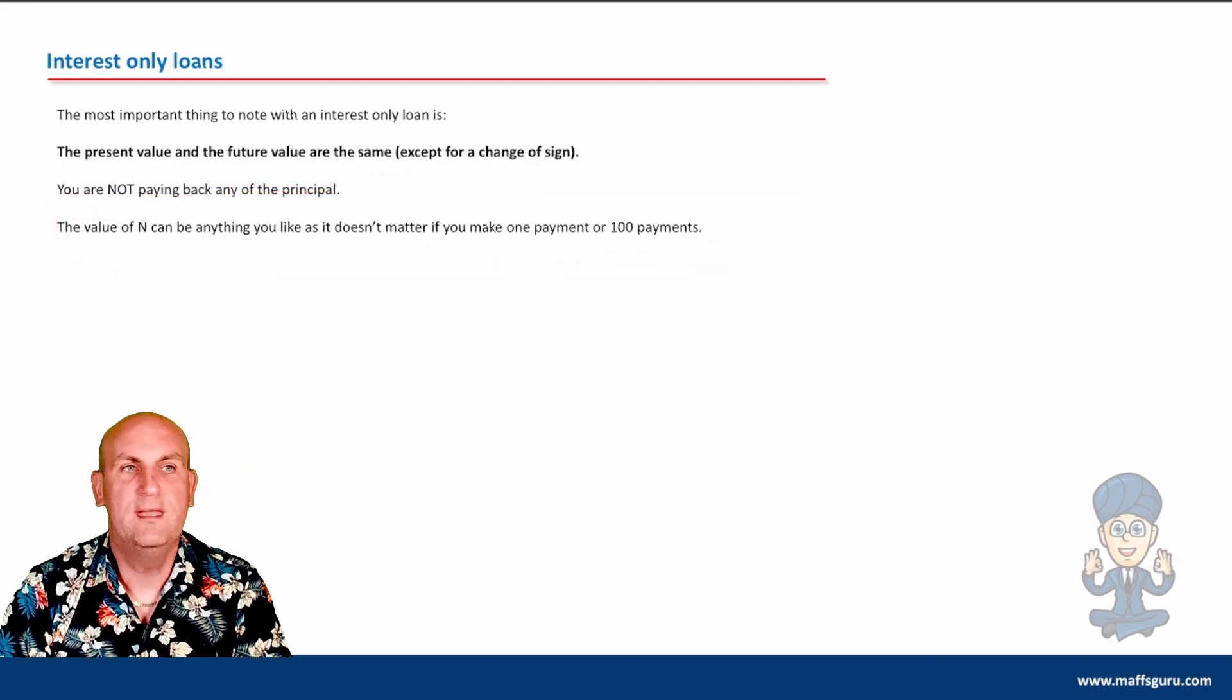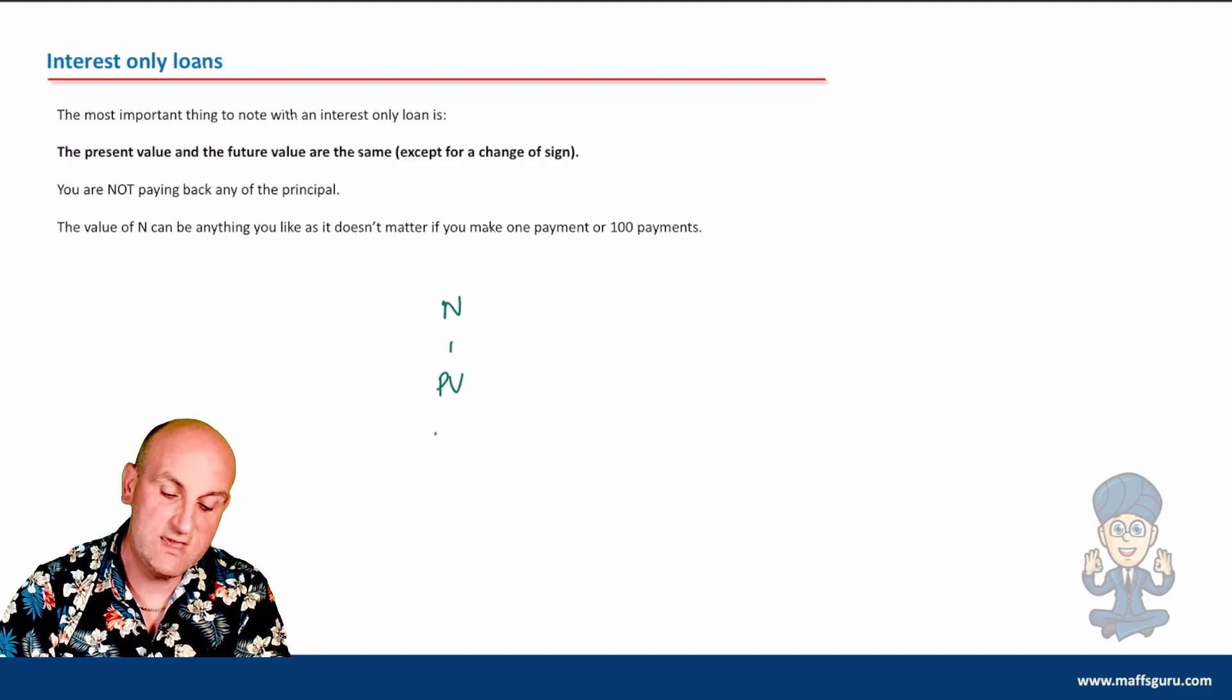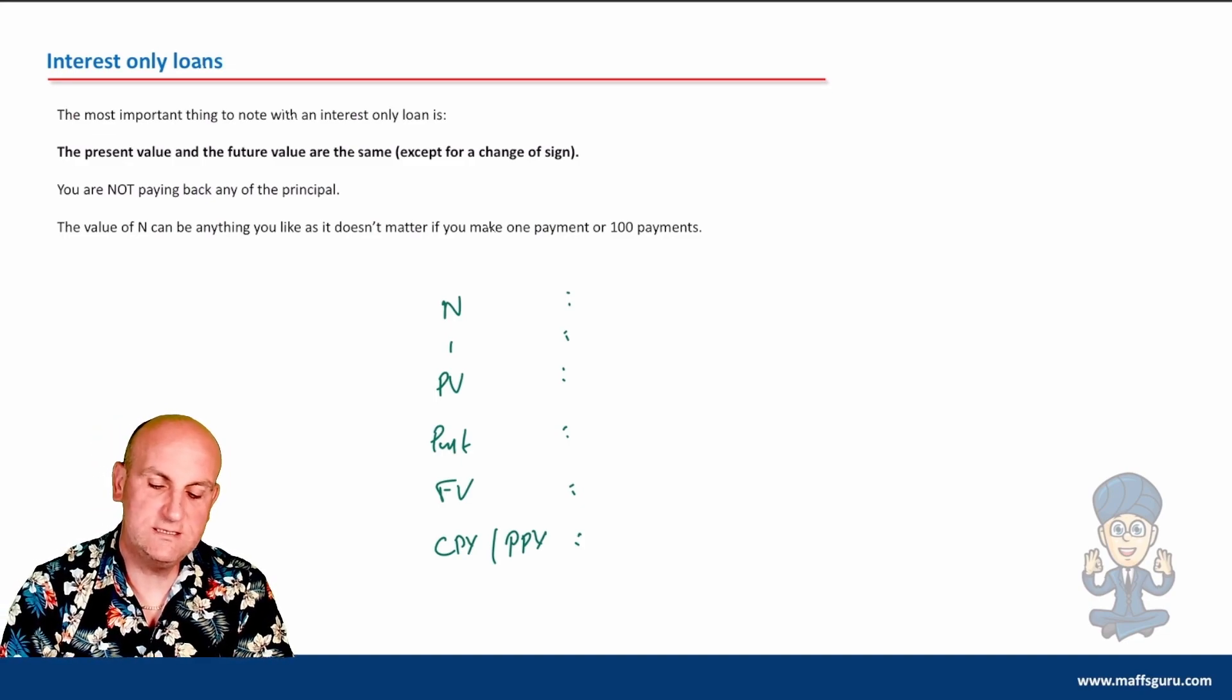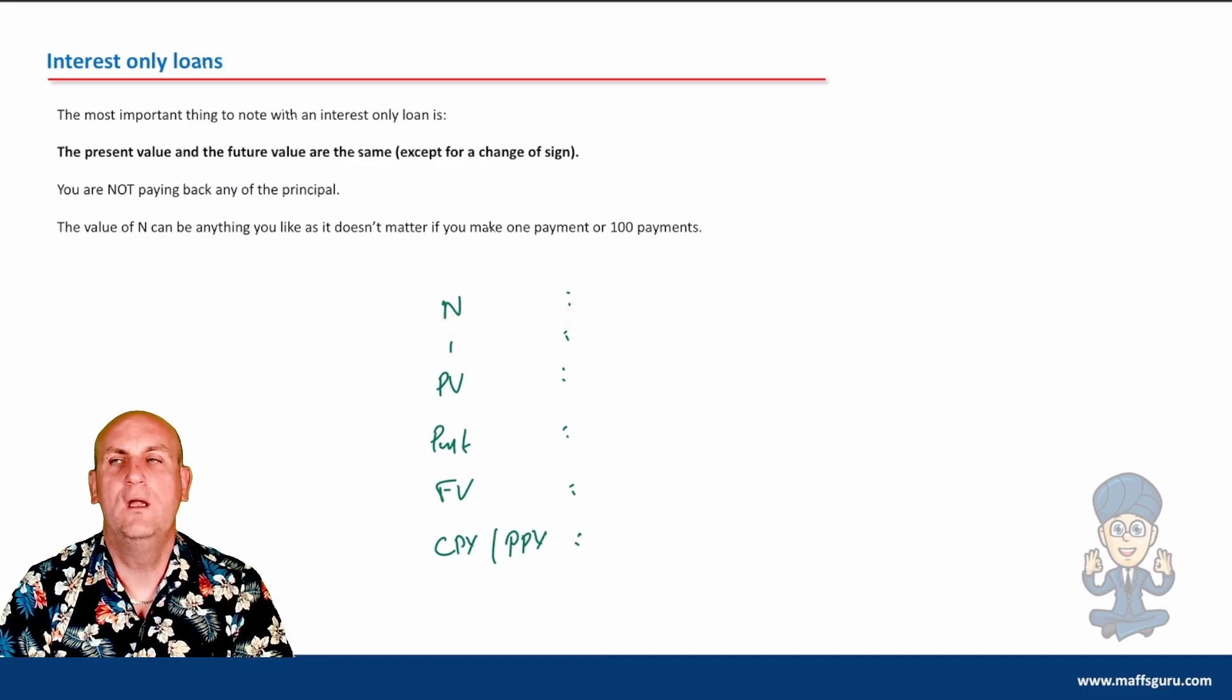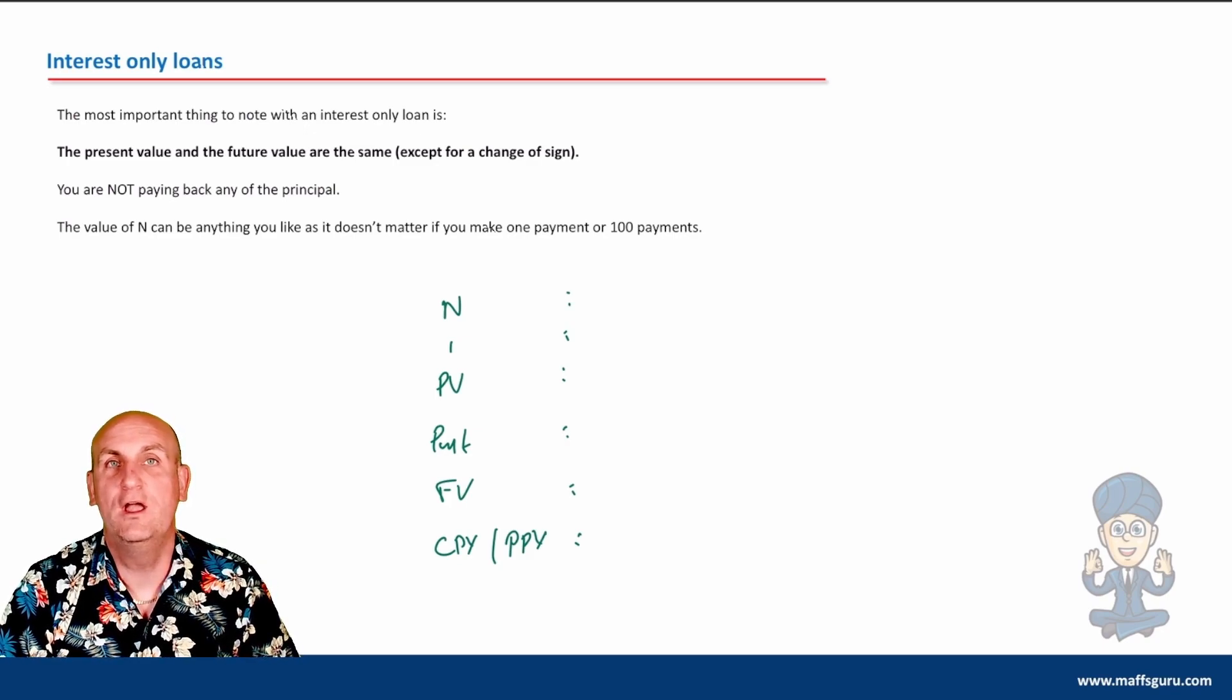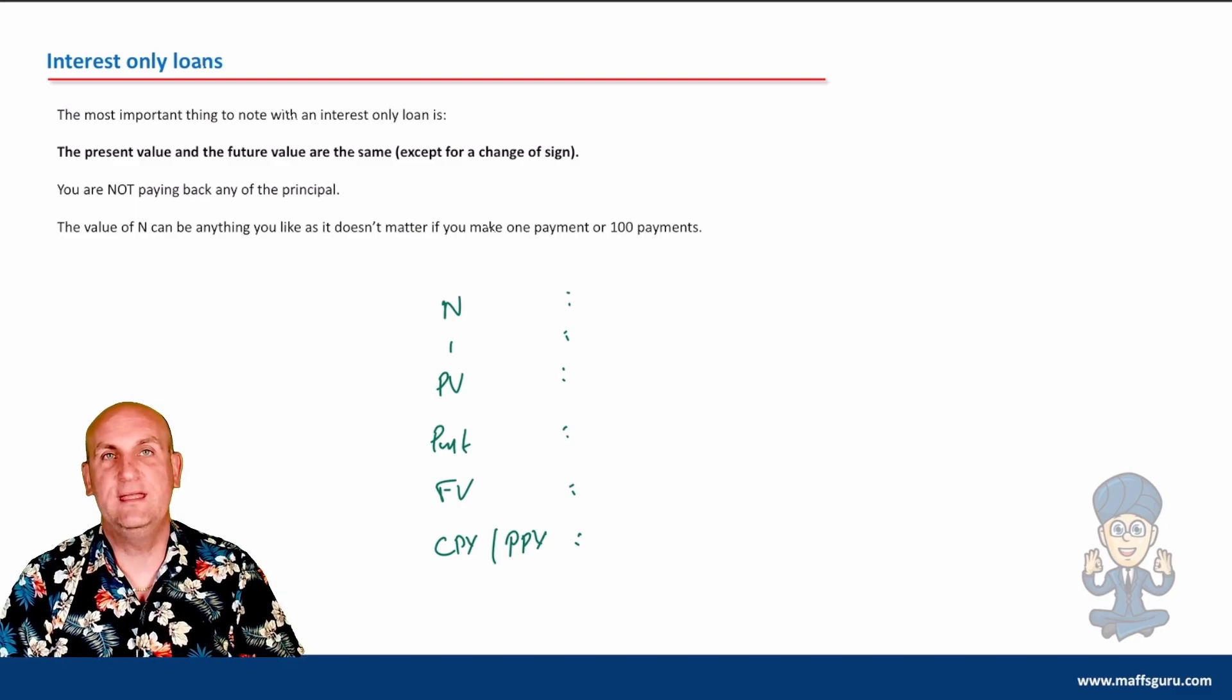These notes are all downloadable from mathsguru.com - it's free to sign up. What's most important to notice is the value of n. You've got n, i, PV, PMT, FV, CPY, PPY. In this situation, n can be any value you like.